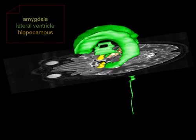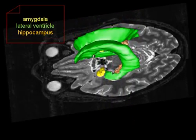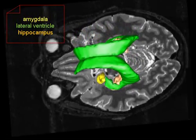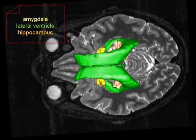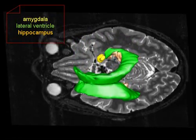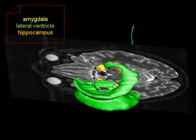Here is the lateral ventricle, shown in green. The lateral ventricle separates the amygdala and the hippocampus. All three structures have been reconstructed and placed in a T2-weighted MRI.